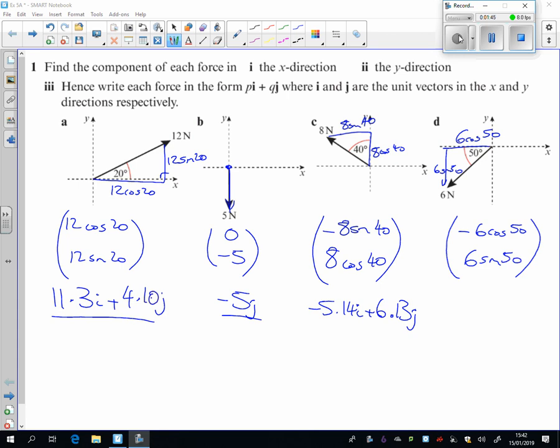And again, putting that in the calculator, I've got minus 3.6i. Now this is actually going down as well, isn't it? So I need another minus there. So that's minus 4.60j. So there's the components for pi.